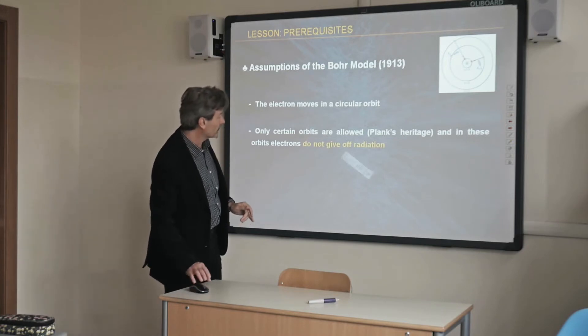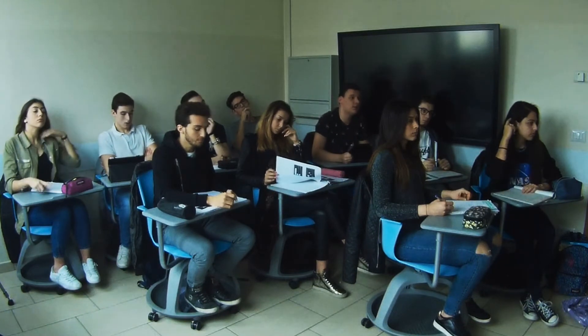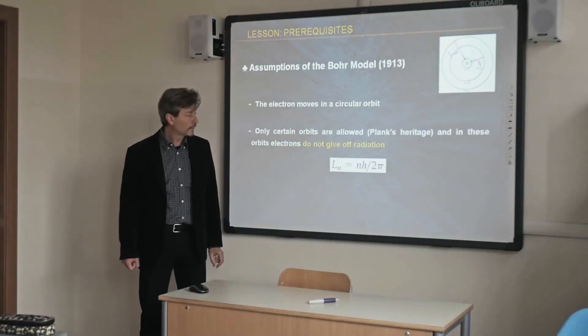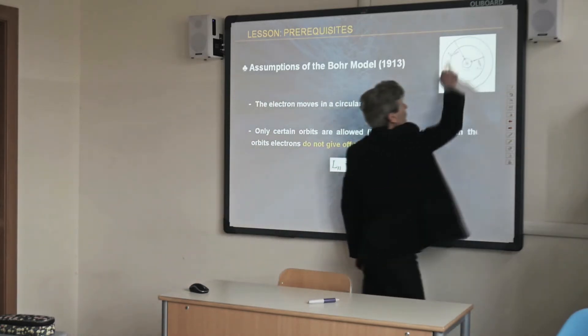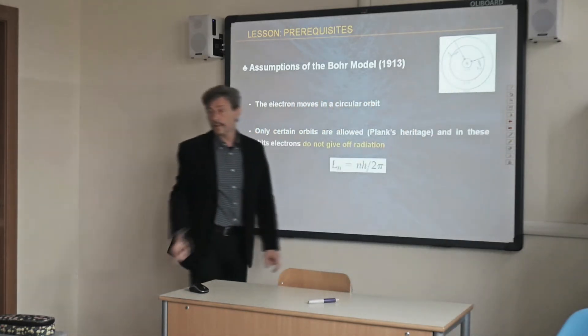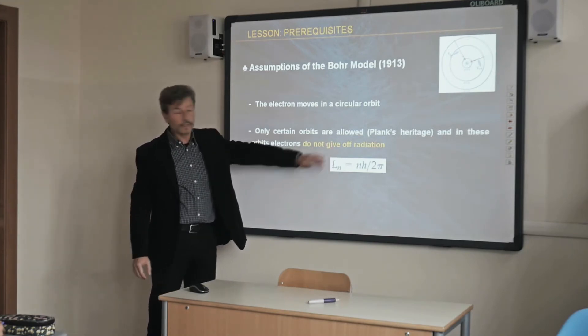Bohr introduced this formula. What is the meaning of this formula? Andrea? It is the angular momentum L, which is equal to an integer multiplied by Planck's constant divided by two pi. So in these quantized orbits, we do not have this problem — electrons do not give off radiation.